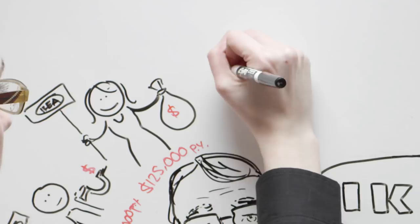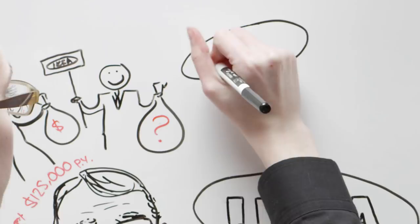IKEA Systems, another private Dutch company, owns the trademark. This means money is paid directly from IKEA profits to the owners of this private company to license the trademark.